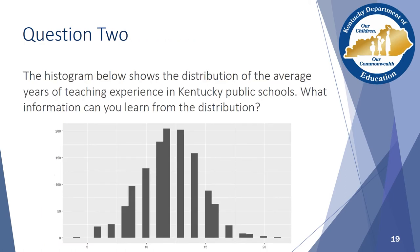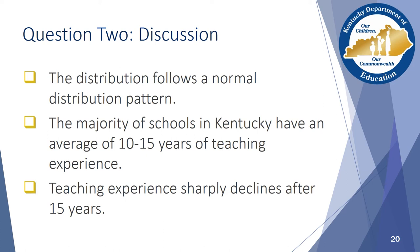Question 2: The histogram below shows the distribution of the average years of teaching experience in Kentucky public schools. What information can you learn from the distribution? Pause the webinar now and replay when you are ready to hear the discussion. A histogram shows the distribution of a set of scores. Since this distribution looks similar to the bell curve we discussed earlier, we know that this data set follows a normal distribution pattern. In other words, the data fell the way that we would expect it to.